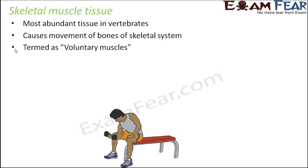Skeletal muscles are also known as voluntary muscles because the movements of bones are controlled by our will. If I want to move my hand, I will move my hand. If I want to cook, I will move my hand for cooking. If I want to play, I will move my legs or arms. These kinds of movements are voluntary movements — on my own will — and that is why these muscles are also called voluntary muscles.